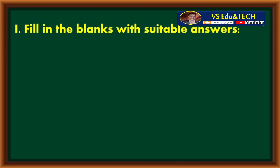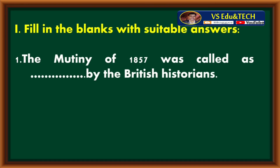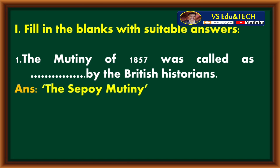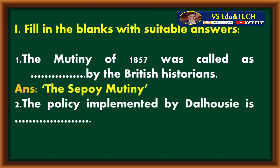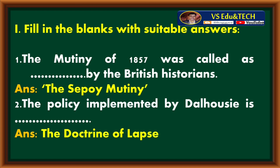Fill in the blanks with suitable answers. The Mutiny of 1857 was called as blank by the British historians. Answer: The Sepoy Mutiny. The policy implemented by Dalhousie is blank. Answer: The Doctrine of Lapse.